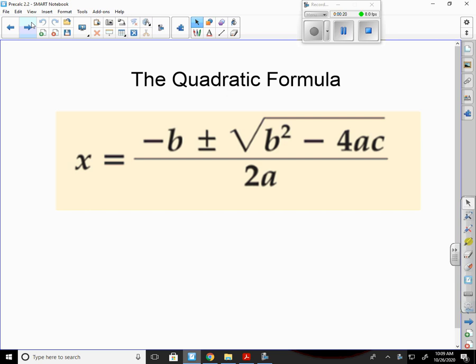Let me rewrite our standard form of a quadratic equation. This is ax squared plus bx plus c. I'm going to take my coefficient in front of the x, the b. It's negative b plus or minus the square root of b squared minus 4ac all over 2a.